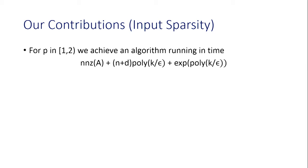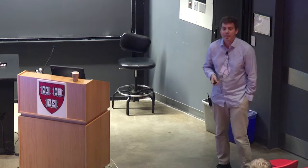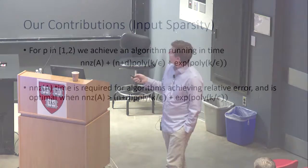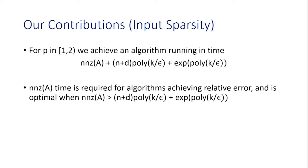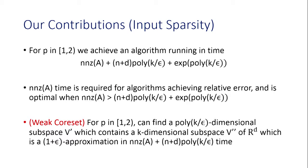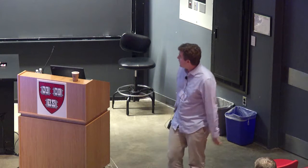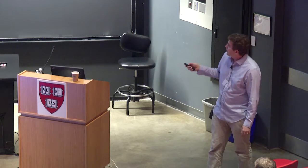The next contribution is an input sparsity time algorithm. For p between 1 and 2, we achieve a running time of nnz(A) plus (n+d)·poly(k/ε) plus exponential in poly(k/ε). Since nnz(A) time is necessary to achieve relative error, this is optimal provided k and ε are not too large. If you don't like the exponential term — which is in some form necessary given the hardness — one way around it is via weak core sets: we find a poly(k/ε)-dimensional subspace V′ containing a k-dimensional subspace V″ that is a (1+ε) approximation, in time nnz(A) plus (n+d)·poly(k/ε).